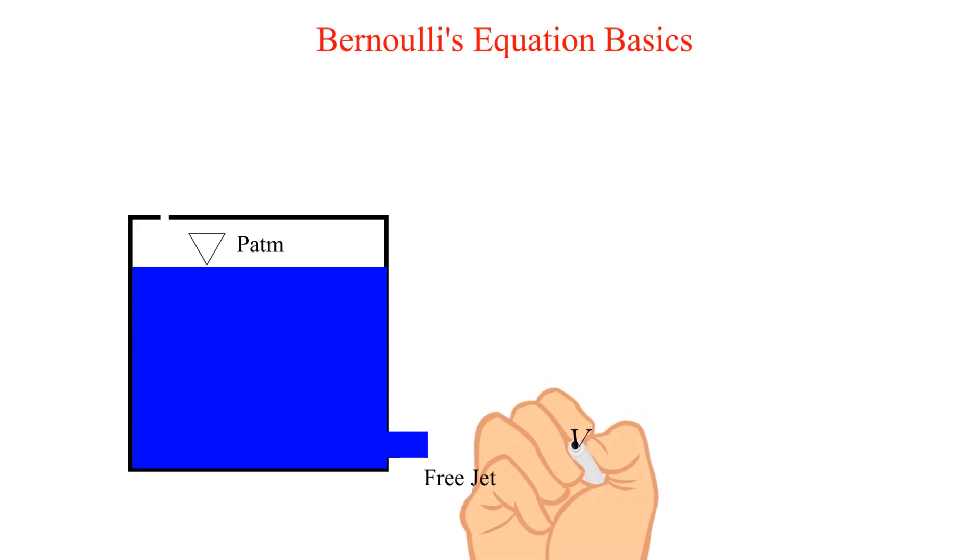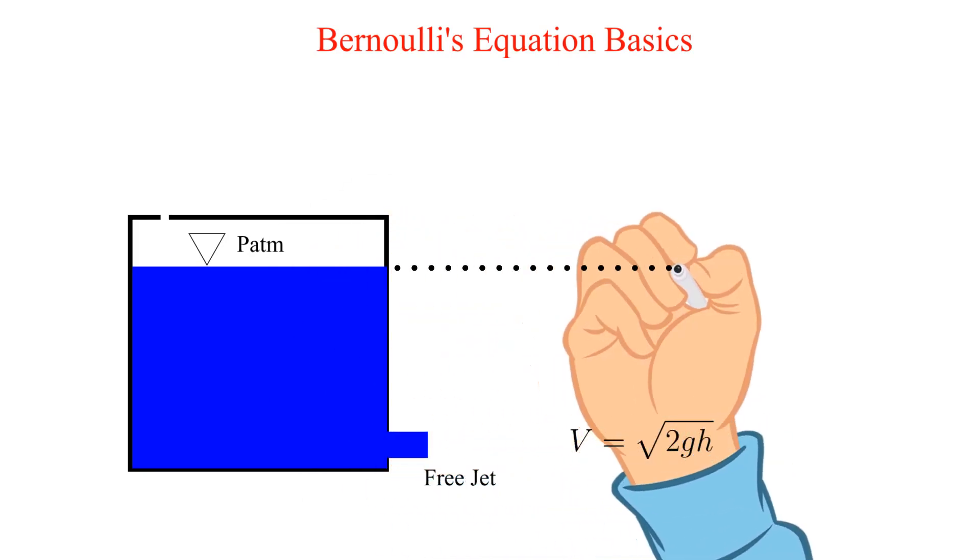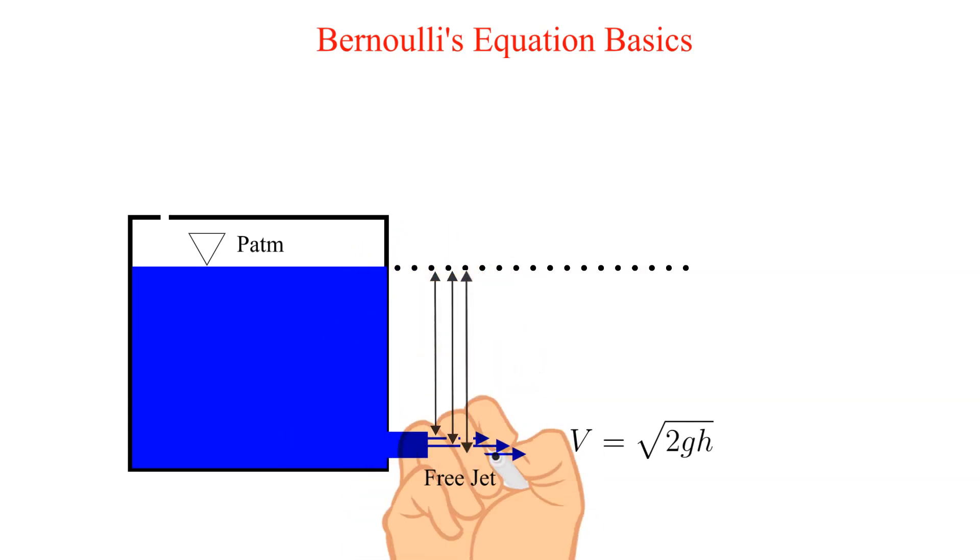The solution shows that the free jet velocity depends on the square root of the depth, in this case denoted by H. The cartoon below shows three jets at different depths, which results in three different jet velocities. Which one is correct?